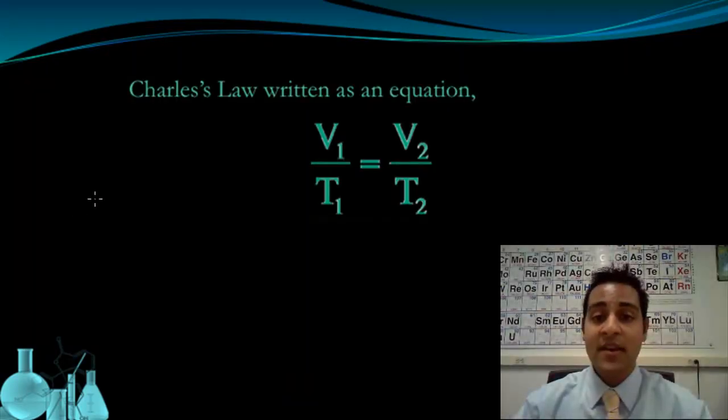Now Charles's Law can be written as an equation: V1 divided by T1 equals V2 over T2. And this equation allows us to make predictions about what will happen if I change either volume or temperature, while holding the amount of a gas and the pressure constant.